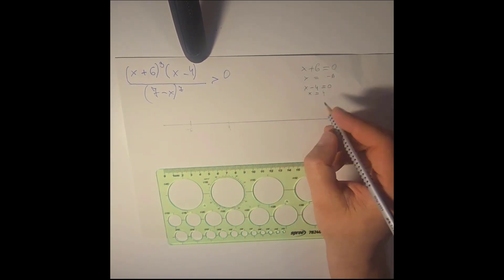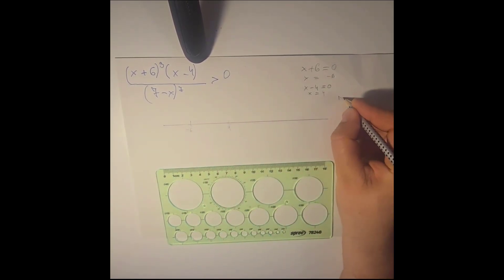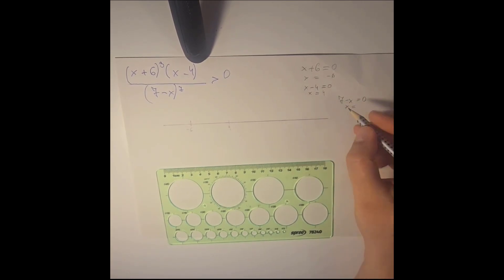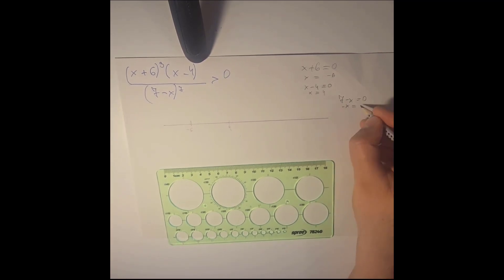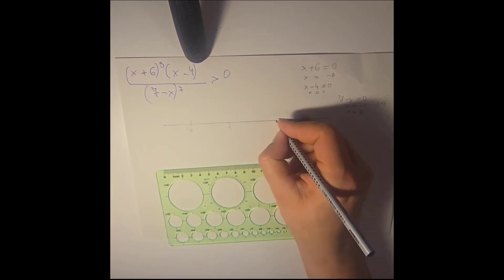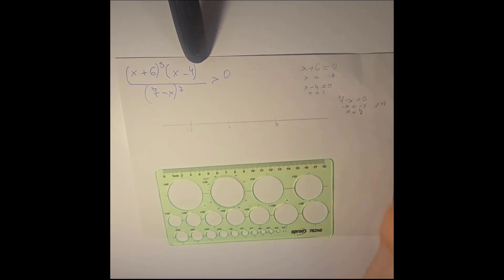And then we need to solve the same for 7 minus x. So in that case x should be equal to minus x should be equal to minus 7. And if we multiply by minus 1 both x should be equal to 7. So let's put 7 somewhere here.